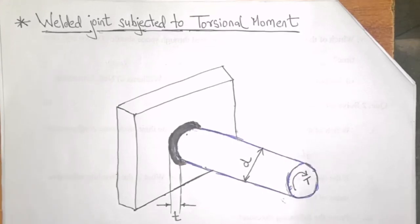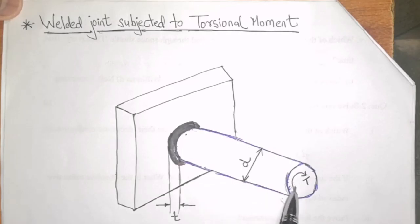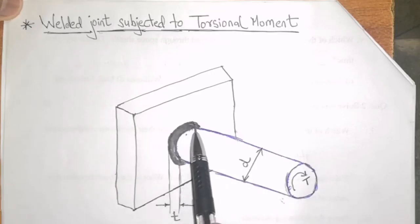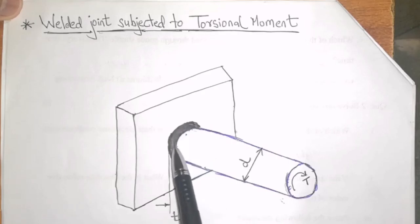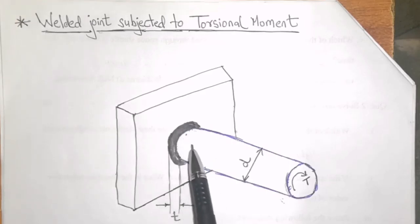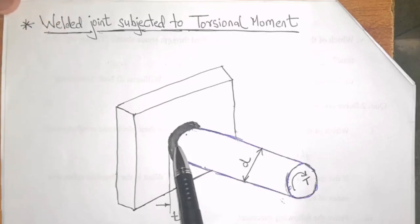Now, let us derive the relation of shear stress which will be induced when the shaft is subjected to torque T. From the figure, we can see that when these shafts rotate or when torque is applied to this shaft, it will produce a shear stress on this circular weld. This weld will get rubbed off with the shaft. Hence, we can say that this weld will be failing by shear or shear stress will be induced on this weld.